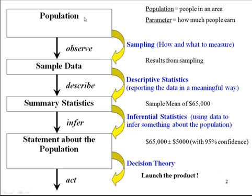So the big picture: we have a population that we want to know something about, say, how much people earn in our area. So we take a sample and get our summary statistics, and we have a sample mean of, say, 65,000. But to infer something about the population, we know that sample results vary. So we might say 65,000 plus or minus 5,000, or from 60 to 70,000. I'm 95% confident that from 60 to 70,000 contains the true population mean for the amount that people earn in my area.